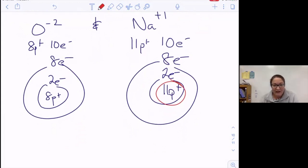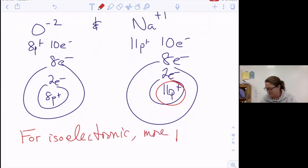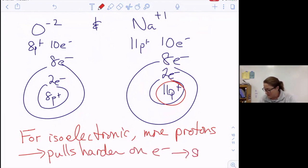So when we have isoelectronic species, the one with more protons pulls harder on electrons, making it smaller. When I am comparing the same element but different charges, the one with more electrons is bigger, whether it's a positive ion or a negative ion. When I'm comparing an atom to its ion, the one with more electrons is bigger. When I'm comparing ions that are isoelectronic, the one with more protons is smaller, so the one with fewer protons is bigger.